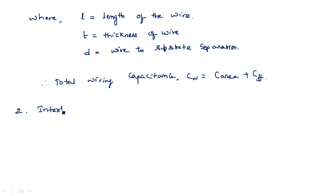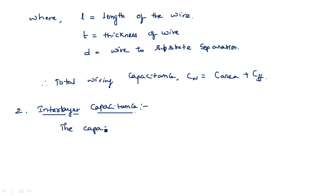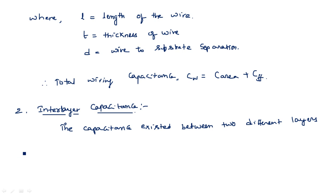The second type is interlayer capacitance. By seeing the name, we can understand it is the capacitance that exists between two different layers.